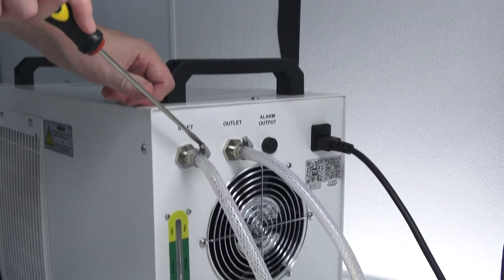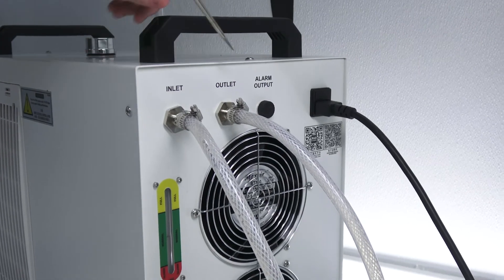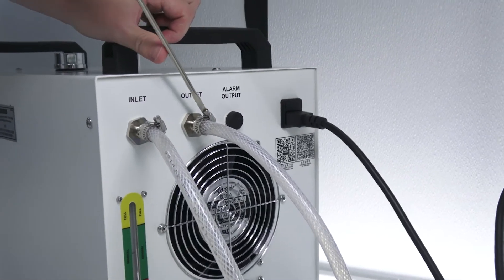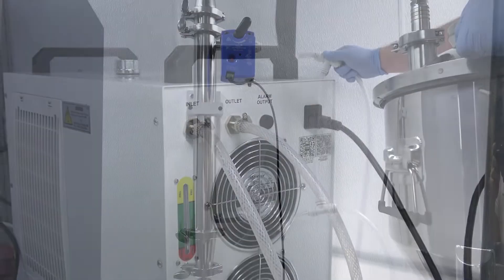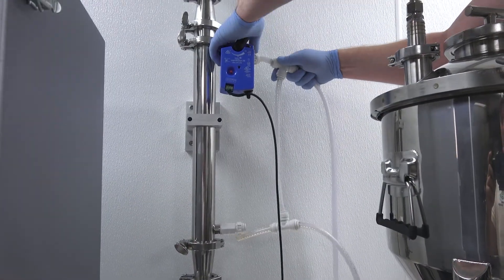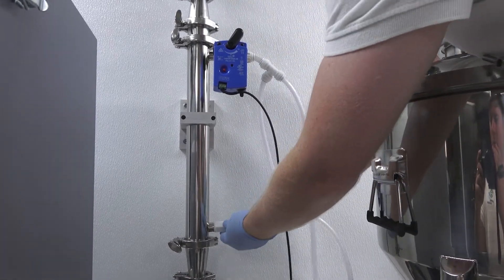Place your chiller in a well-ventilated location and attach the chiller hose kit, making sure your hose clamps are securely fastened. Now we connect the other end of the chiller hose kit to the heat exchanger, making sure that the chiller outlet is connected to the lower heat exchanger inlet.